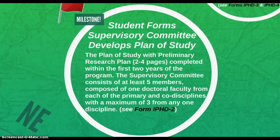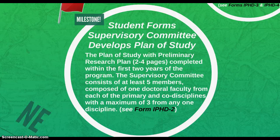The first milestone in the student's program is when the supervisory committee is formed and the plan of study is developed. The plan of study form IPHD 2 is submitted to the School of Graduate Studies with a two to four page preliminary research plan during the first two years of the program. The supervisory committee consists of at least five faculty members, one from the primary and co-discipline, and a maximum of three from any one discipline.